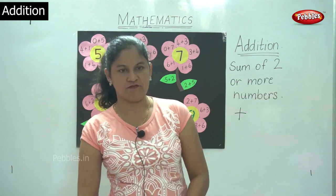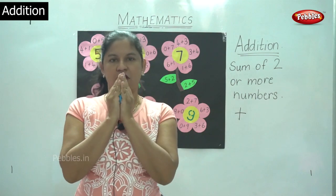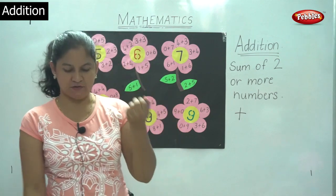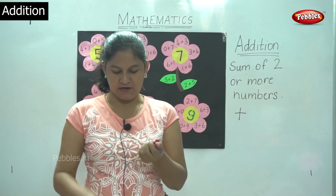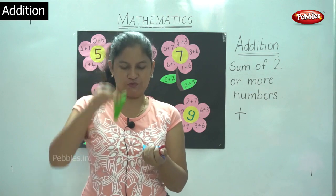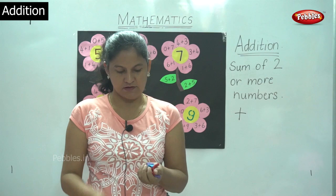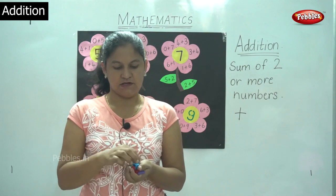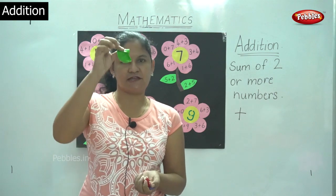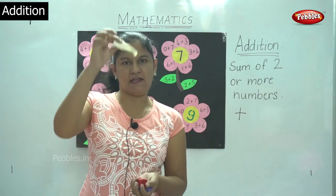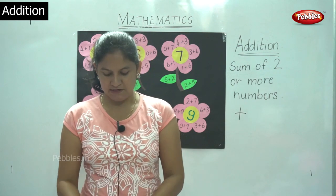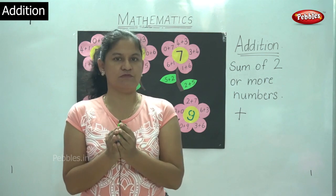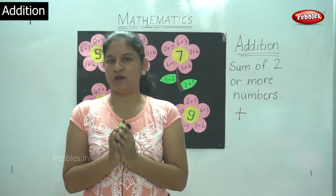I have these balloons in my hand and I am going to count to know how many balloons I have. I am going to keep them down as I count. So I have 1, 2, 3, 4, 5, 6, 7, 8, 9 and 10 balloons. So I have a total of 10 balloons with me. That is the sum of two or more numbers.